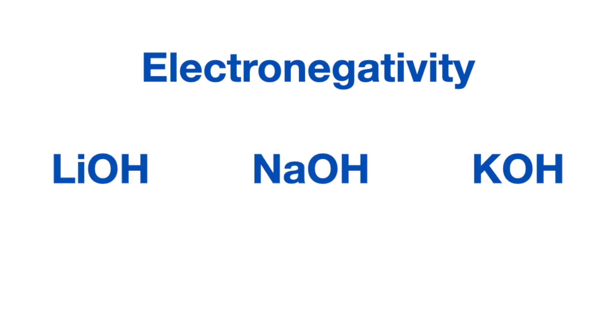Electronegativity is one of the factors we can consider when ranking bases. When comparing bases that differ only by the electronegativity of the atom bonded to the hydroxide in the basic compound, the more electronegative that atom is, the more attractive it is to the hydroxide and therefore the stronger bond it forms with it, making it less likely to break that bond and release the hydroxide as a base into solution.